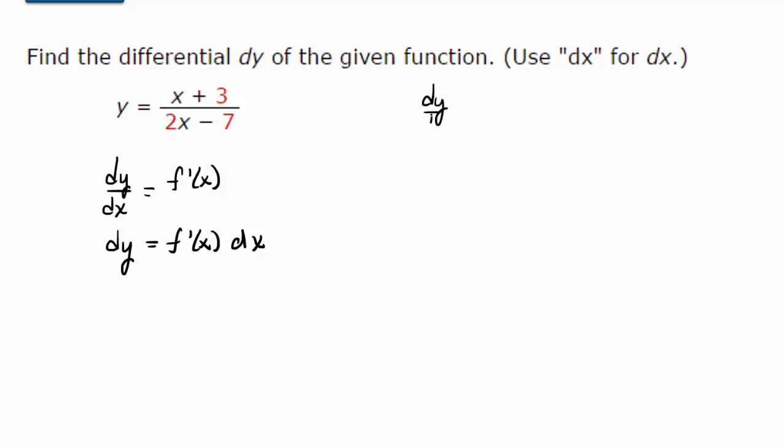So in this case, for example, dy dx we would find using the quotient rule. The quotient rule tells us the bottom times the derivative of the top minus the top times the derivative of the bottom over the bottom squared.